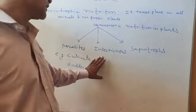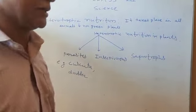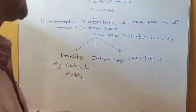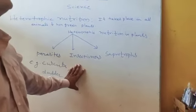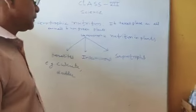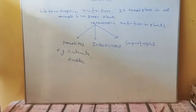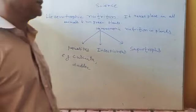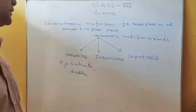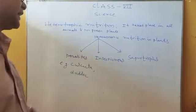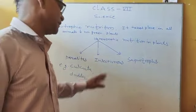The next type is insectivorous plants. An insectivorous plant, for example the pitcher plant, traps insects. When an insect sits on this plant, it covers that insect and the insect is digested by this plant.